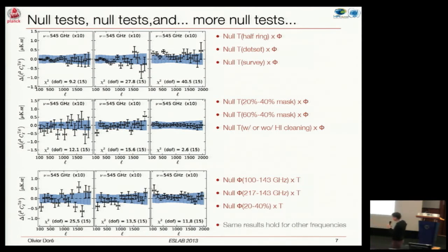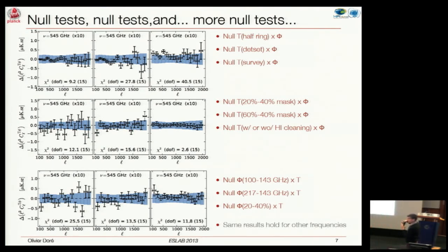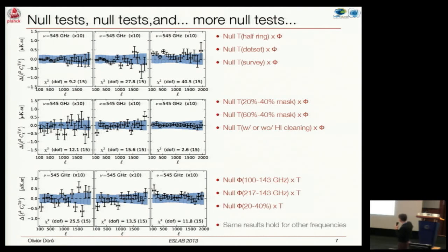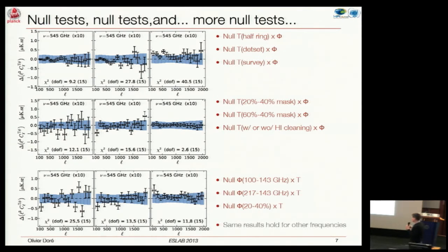We also consider various galactic masks. Our nominal mask is about 40% of the sky, which is quite conservative. If you consider a more aggressive mask keeping only 20%, or a more extended analysis keeping 60% of the sky, the results are fairly consistent. We can also null the lensing reconstruction by reconstructing the lensing at various frequencies—our basic reconstruction is at 143 GHz, but we can also reconstruct it using the 100 GHz channel and take differences. All these tests passed pretty nicely, so you can believe what you saw previously in terms of it being a signal.